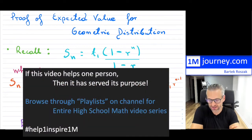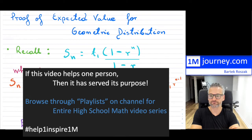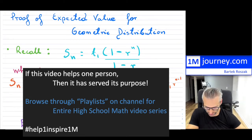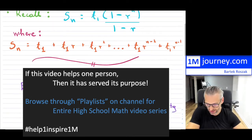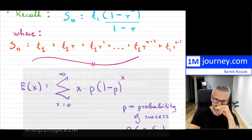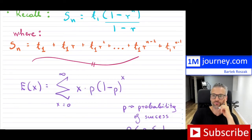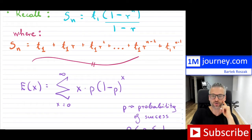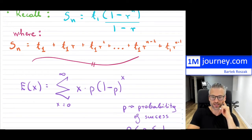Welcome in. This is a proof of the expected value for the geometric distribution. If you take a look at the expected value for the geometric distribution when you're starting off studying this in probability, most likely in grade 12, you may not see this proof. But I think it's worthwhile to always take a look at some of the proofs so that you can get a gauge of where these things are coming from.